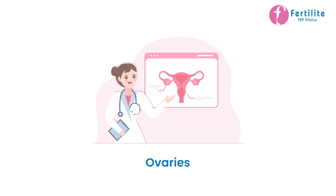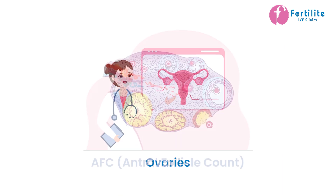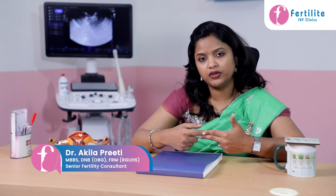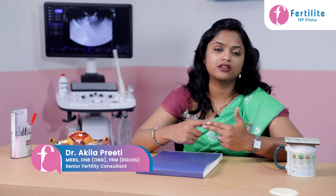The third test is transvaginal ultrasound, which should also be done between day two or day three of the cycle. In the scan, we look at the ovaries and count the antral follicles — combining both ovaries together. The normal antral follicle count should be at least a minimum of 10 combined. If the AFC value is less than six, we document this as diminished ovarian reserve, and again we need to plan pregnancy as soon as possible.